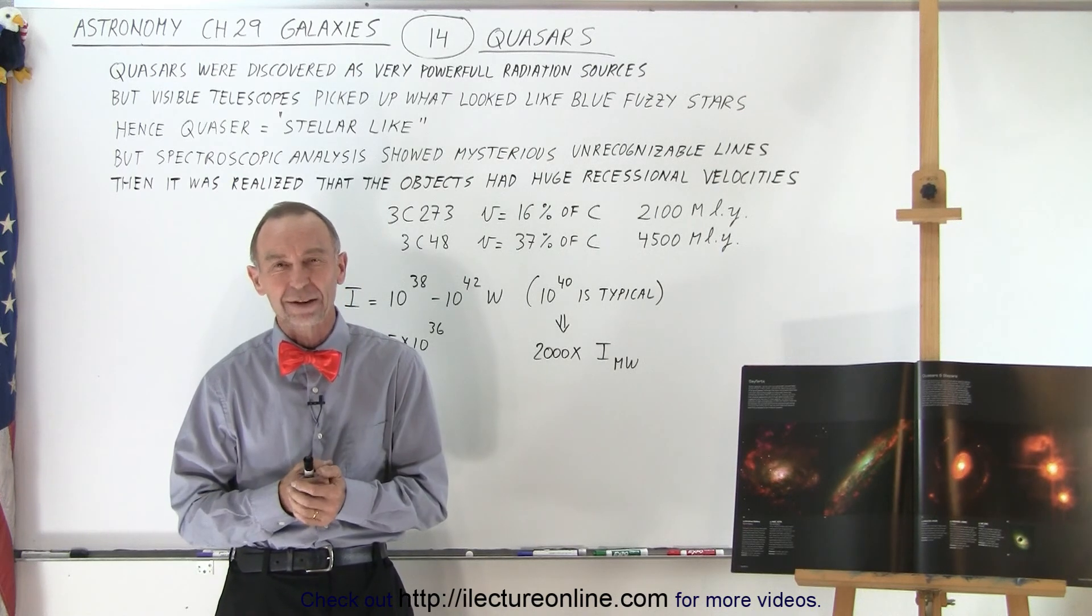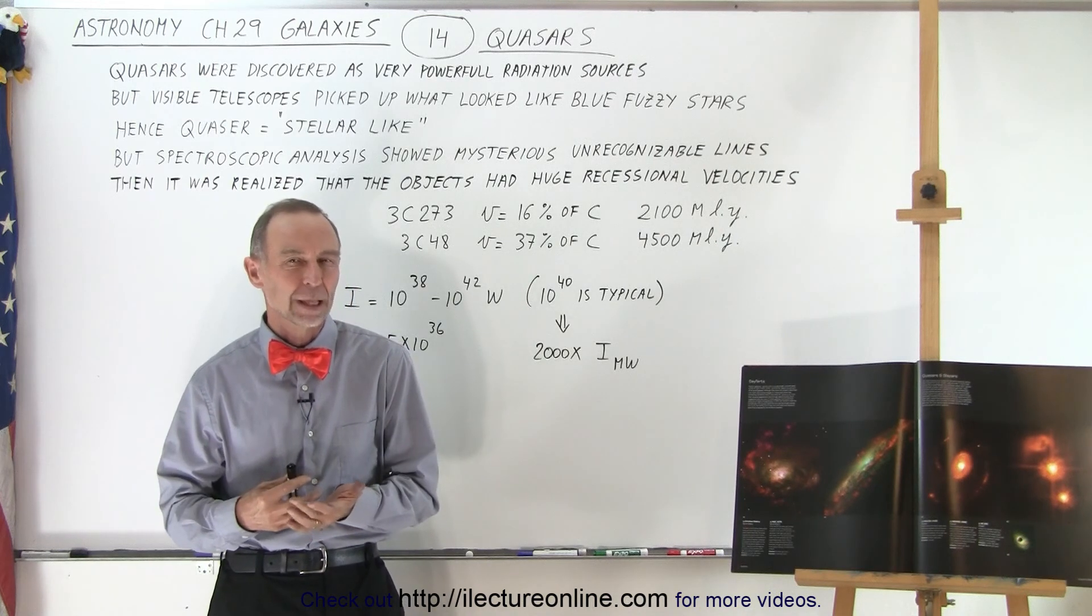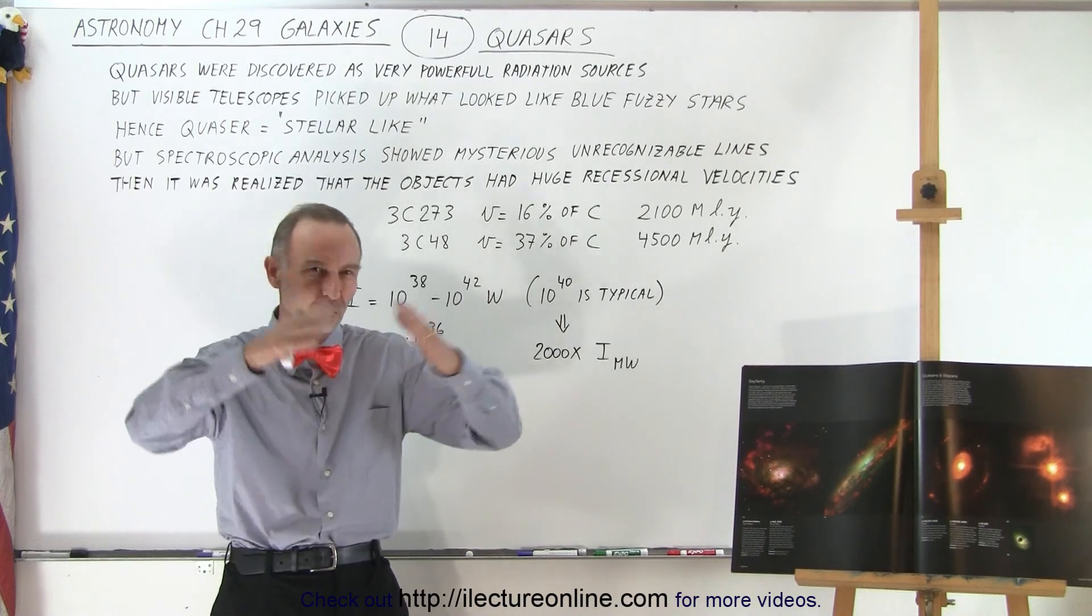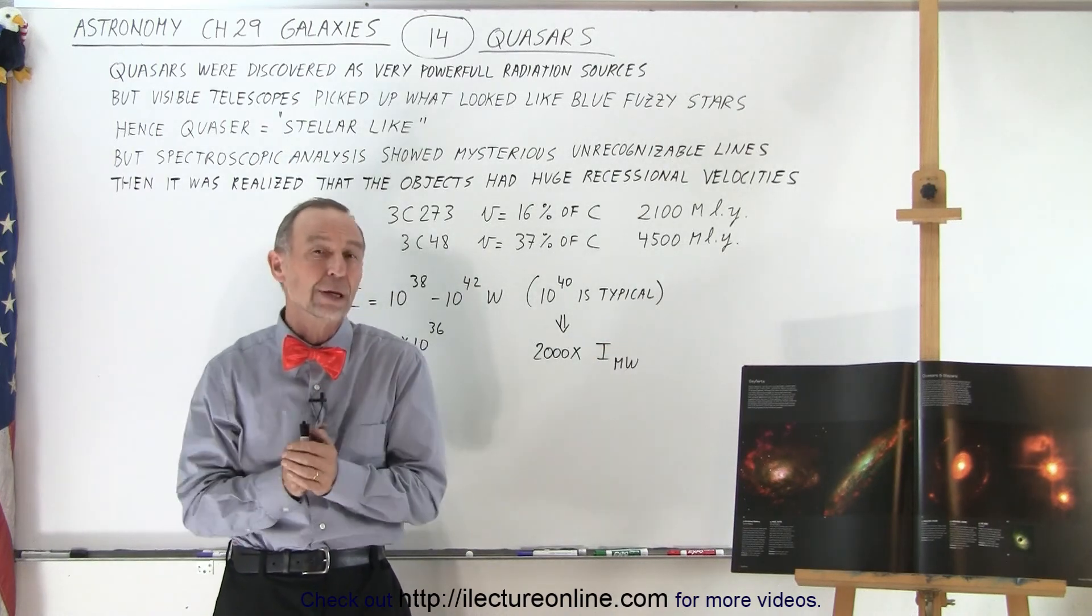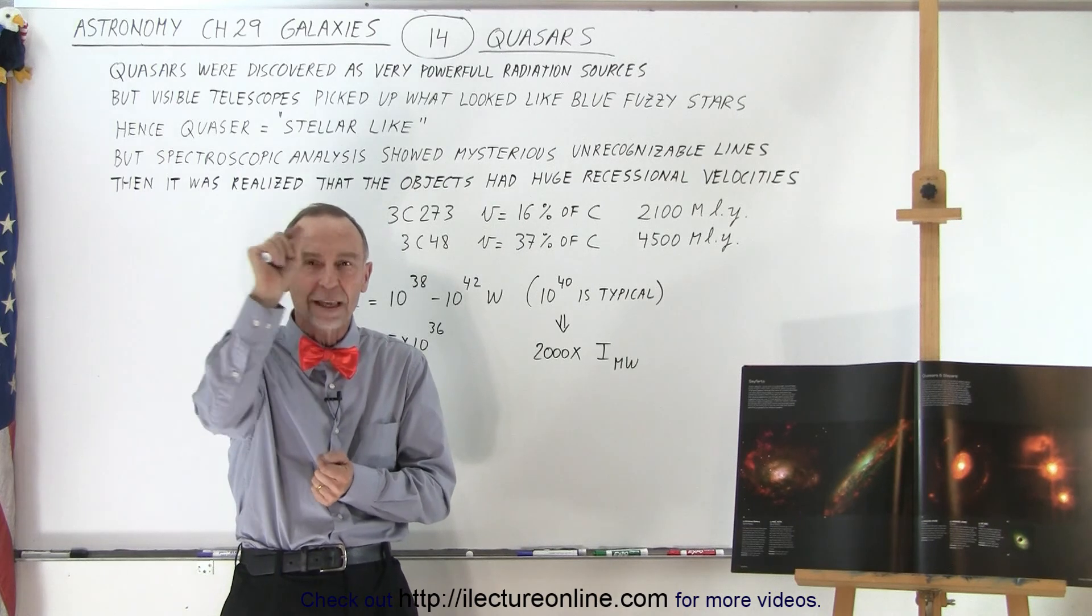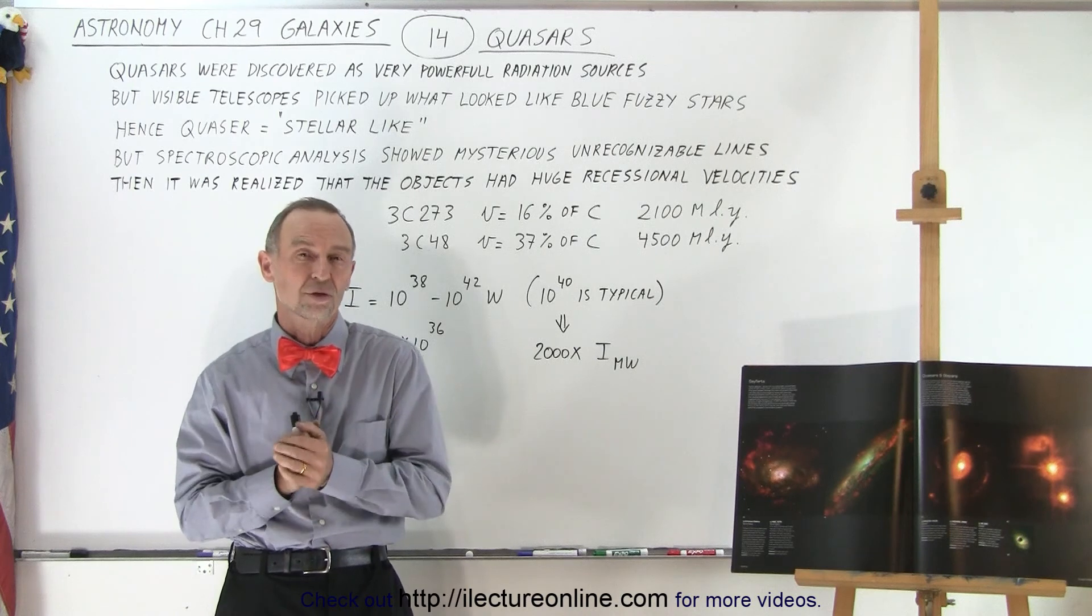Quasars had an interesting story, especially in how they were discovered. When they started with radio telescopes and began to search the sky for radio radiation, they began to see different spots in the sky where there was a strong radio source.